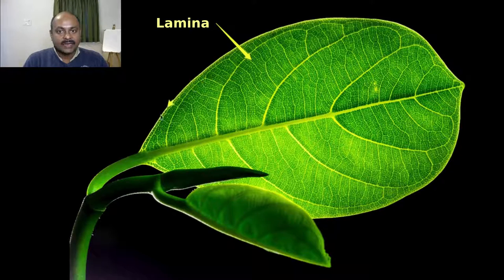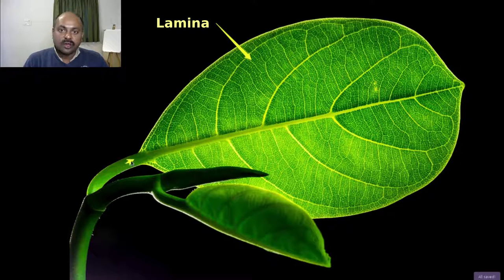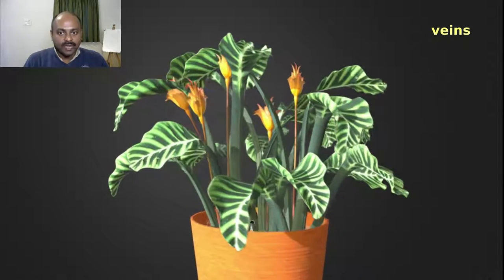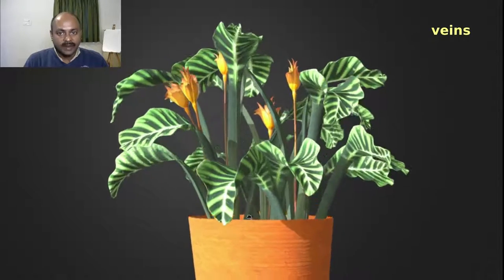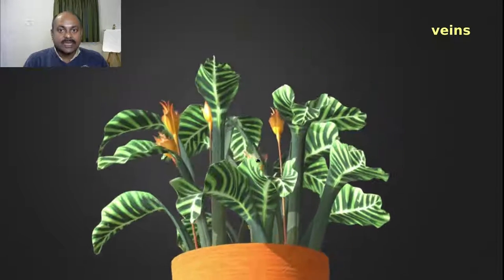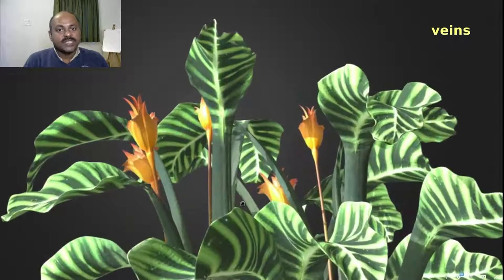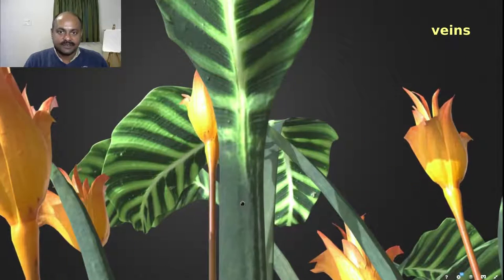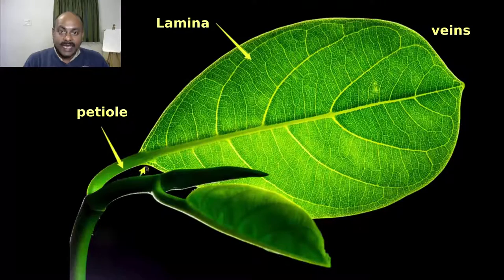This lamina is attached to the stem by means of a small stalk called a petiole. Just as we have veins in our body which carry blood, leaves also have veins. These are most prominently, most clearly seen on the under surface of the leaf. The veins support the lamina.